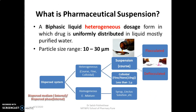Pharmaceutical suspension is a biphasic liquid heterogeneous dosage form in which drug is uniformly distributed in liquid, mostly in purified water, having particle size of 10 to 30 micrometers. We discuss about heterogeneous systems; it is divided into two suspensions — coarse suspension and colloidal suspension, which could be nano suspension or fine colloidal suspension.